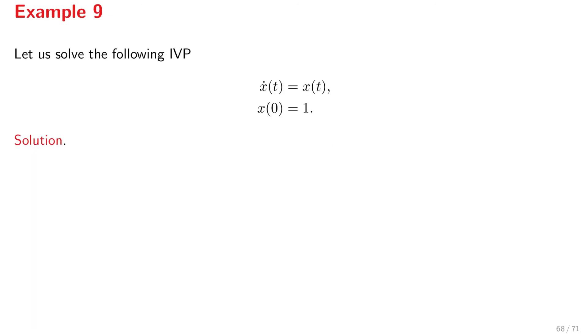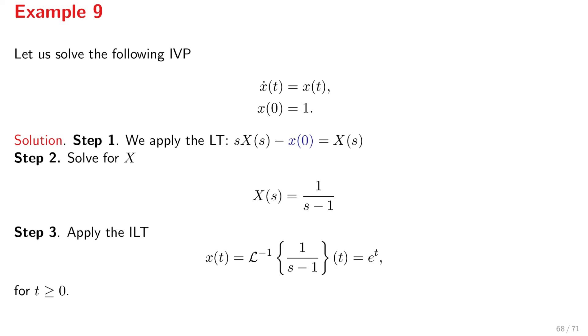Let's have a look at this initial value problem. So, x dot is equal to x with x at 0 is equal to 1. The first step is to apply the Laplace transform. So, the Laplace of x dot is sx minus x at 0, and we apply it on the right hand side, of course, which is x uppercase. Then, we solve for x uppercase. So, we move things on the left hand side and the right hand side, and we have that x of s is 1 over s minus 1. We apply the inverse Laplace transform on this expression, and we have that x of t is exponential of t defined for non-negative times.